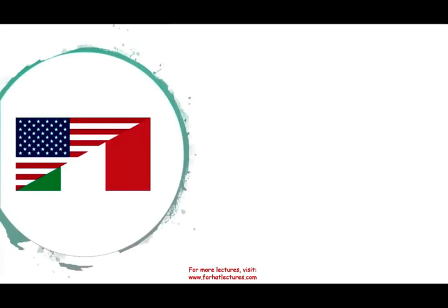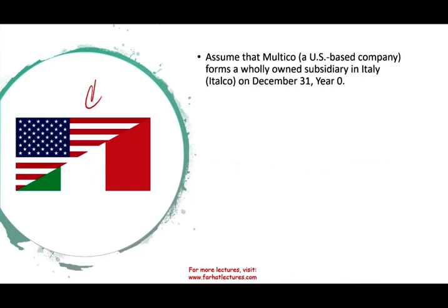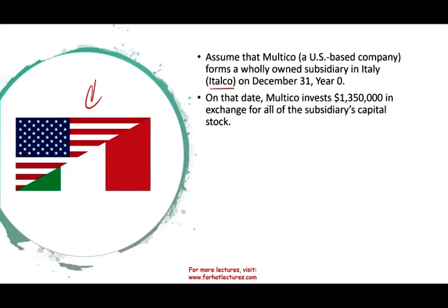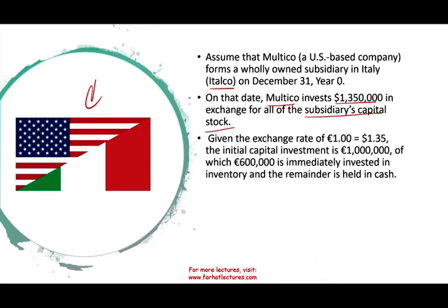To illustrate the concept, we're going to assume we are working with a multinational company based in the U.S., and what they did is they bought a subsidiary in Italy — an Italian company — on December 31st, year zero. On that date, the parent company invested 1,350,000 U.S. dollars in exchange for all the stocks of the subsidiary. The exchange rate was one euro equal to $1.35, so we effectively made an investment of one million euros. Of that investment, 600,000 euros was immediately invested in inventory and the remainder, 400,000 euros, was held in cash.